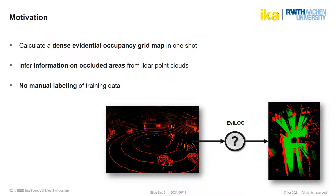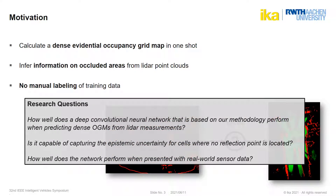We expected that such a deep inverse sensor model would be able to infer more information from the reflection points in the point cloud. In particular, we wanted the algorithm to mark all cells covered by other traffic participants, instead of only the cells containing reflection points. Finally, as labeling this type of data by hand would be especially hard, we wanted to rely on synthetic data generated using simulation software only. We wanted to answer the research questions: how well does a deep convolutional neural network based on our methodology perform when predicting dense OGMs from LiDAR measurements? Is it capable of capturing the epistemic uncertainty for cells where no reflection point is located? And how well does this network perform when presented with real-world sensor data?